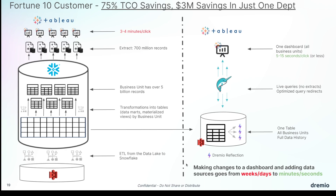Now let's look at some examples of people who've benefited from using Dremio to improve their Snowflake story. Here we have a Fortune 10 customer who saw a 75% TCO savings and a $3 million savings in just one department. Let's take a look at what their setup looked like before.